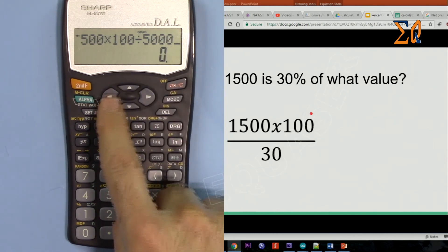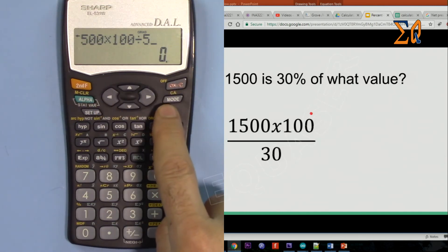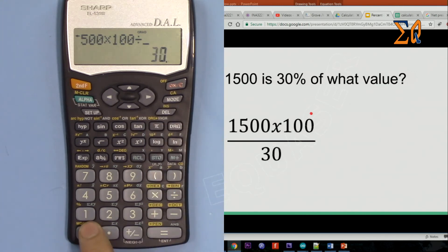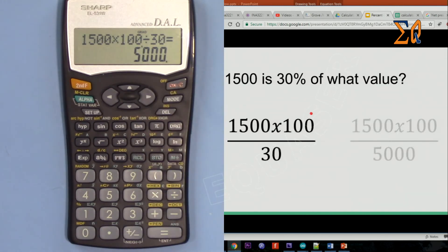So left arrow, then press delete three times, and this time just type 30. The answer is 5000. Now let's pay attention here - these two equations for the two other formats: 1500 times 100, and both just have the denominator change from 30 to 5000.